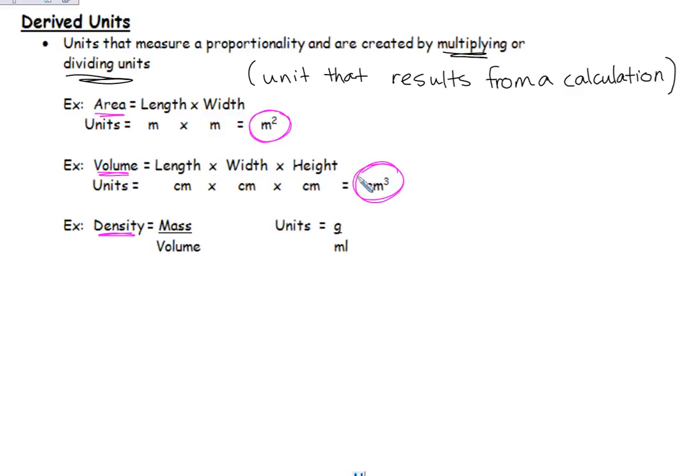And again, you know volume is length times width times height. And again, before you multiply those distances, they would need to be in the same unit. So these are all in centimeters. Well, then your unit just reflects the calculation. You multiplied centimeter times centimeter times centimeter. So magically, your final unit is cubic centimeters. I can tell that that unit represents a volume.